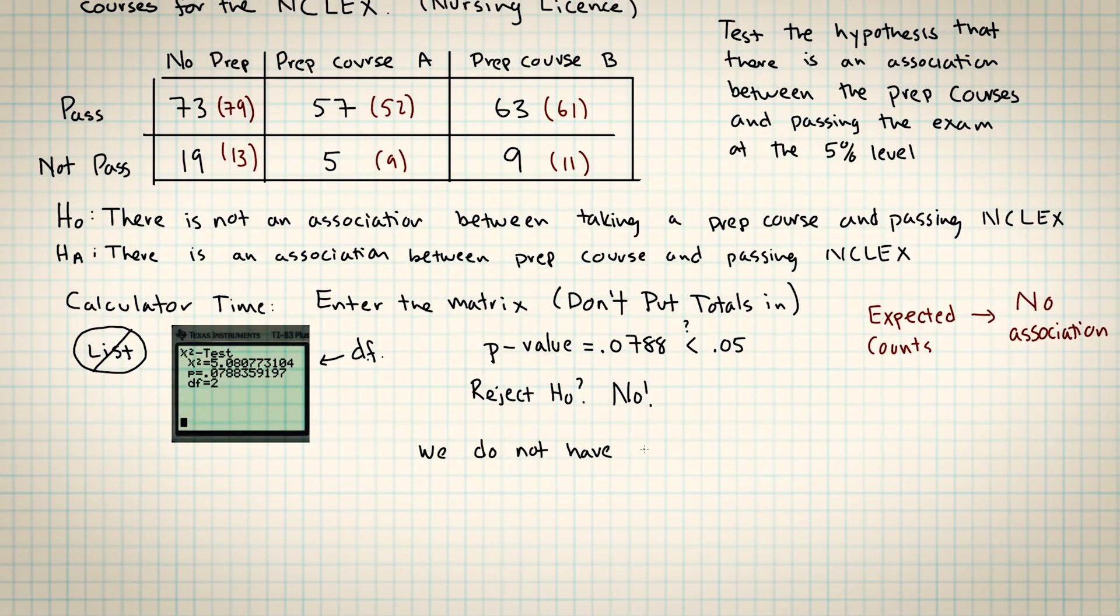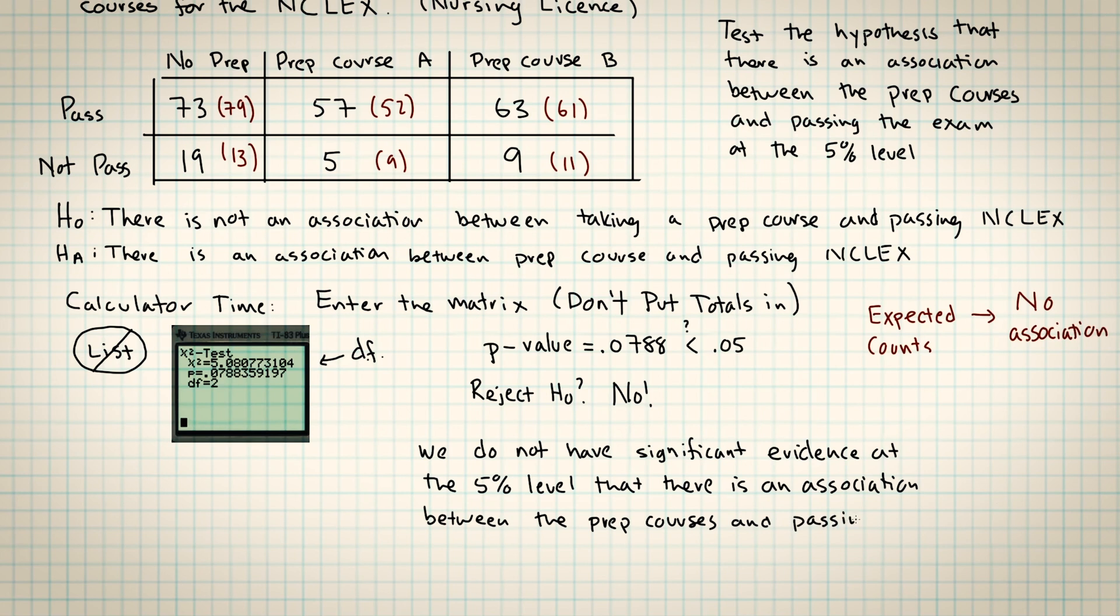So this evidence that we have here is not significant. This does not provide us enough evidence that taking these prep courses will help you pass this nursing test. That doesn't mean that the courses don't help. It just means that this isn't evidence that they do. Perhaps if we went out and we collected more data and we had a larger sample size, then even if the proportions were the same, it might be significant evidence. I just want to be clear, this result does not mean that the courses are a waste of time. It just means that this evidence is not strong enough to suggest that the courses are helping.